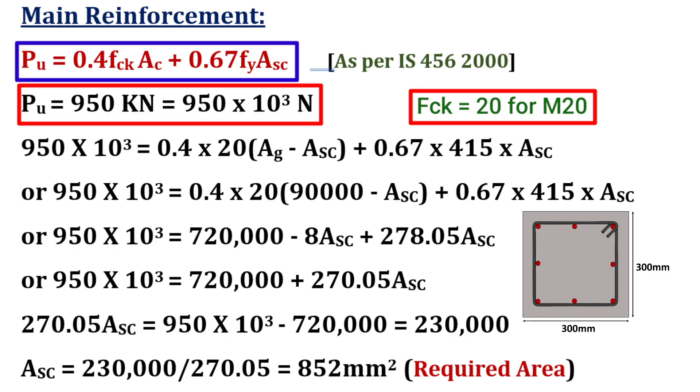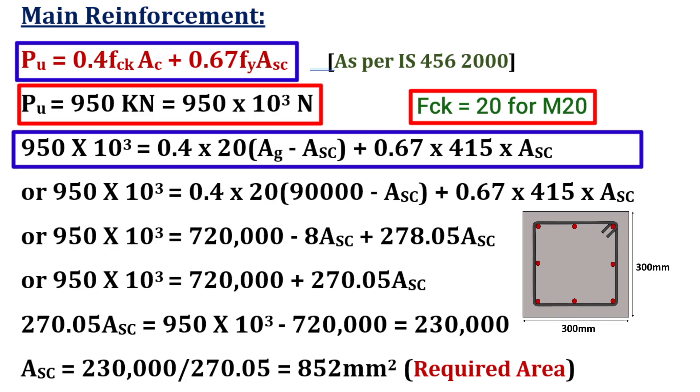By putting these values in this equation, we get 950 x 10 raised power 3 equal to 0.4 x 20 into Ag minus Asc plus 0.67 x 415 x Asc.